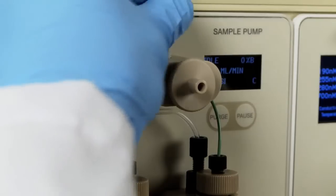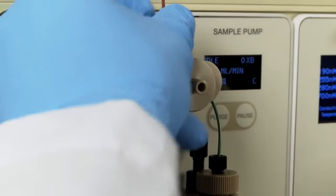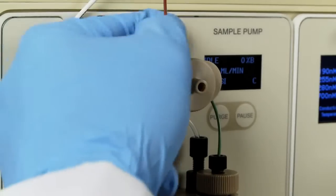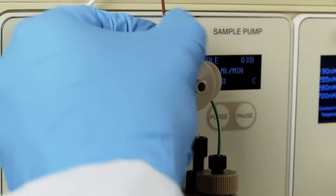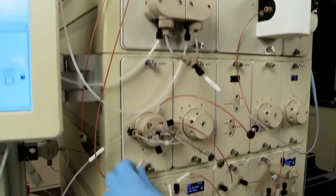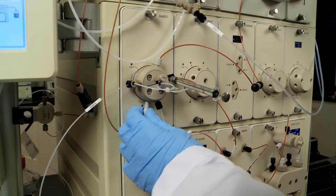Now you will attach peak tubing from the sample pump to the injection valve. First, connect the tubing to the outlet port of the sample pump manifold. Now attach that line to the sample pump inlet of the injection valve.